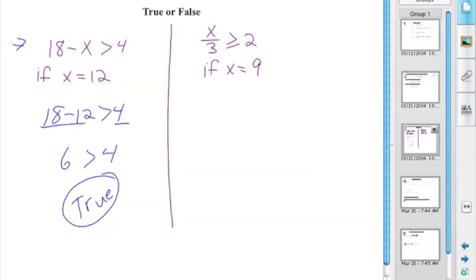In the other one, we have x over 3. x divided by 3 is greater than or equal to the number 2. If x is 9, we want to see if that works. So we substitute in 9 over 3 greater than or equal to 2. Again, I hope the math on the left-hand side equals the math on the right-hand side. 9 divided by 3 is 3. Is 3 greater than or equal to 2? 3 is greater than 2. So that works. That is also true.